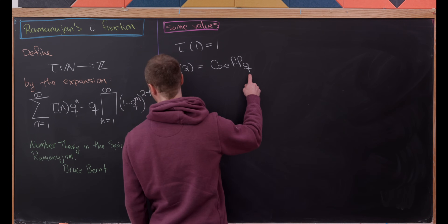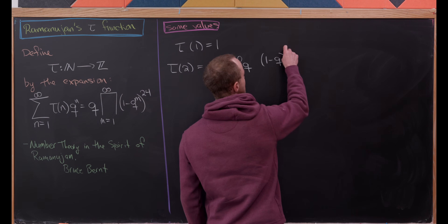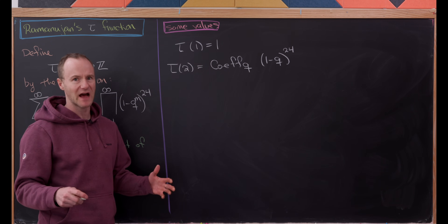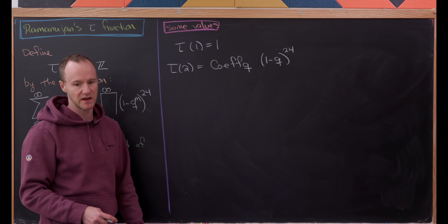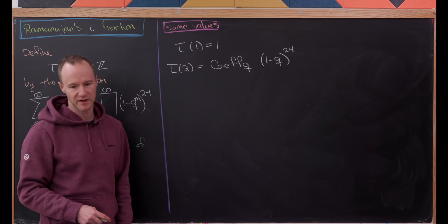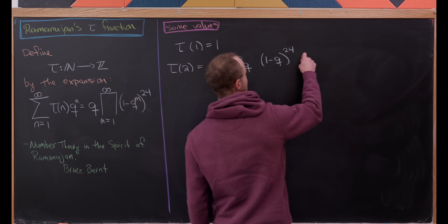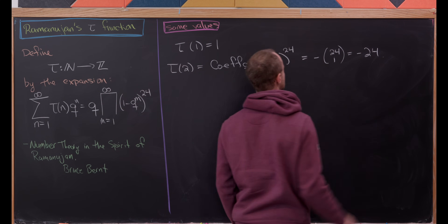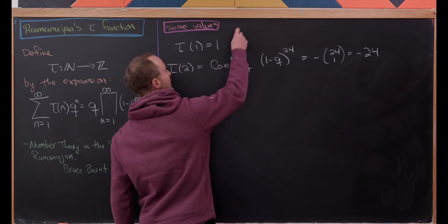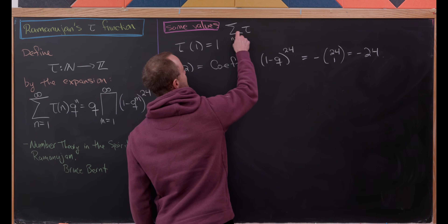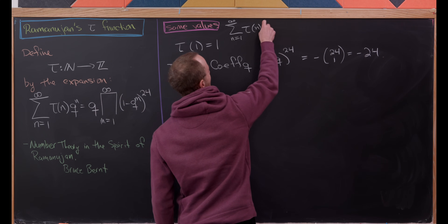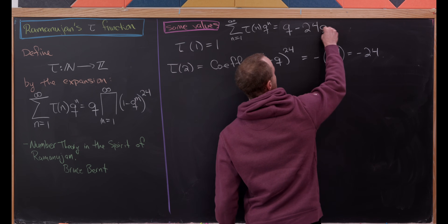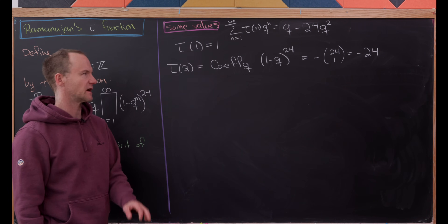So that means we have the coefficient of (1 - q)^24. This coefficient is defined by the binomial expansion — since we have a minus sign, this will be minus 24 choose 1, in other words minus 24. So keeping track, we'll have the sum as n goes from 1 to infinity of tau(n) q^n equal to q minus 24q² and then some other stuff we'll calculate as we move forward.